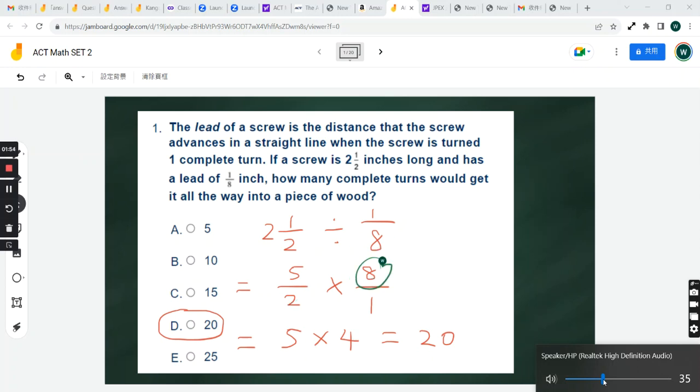So this is equivalent to 5 times 4. 5 times 4 equals 20. So the answer is D.